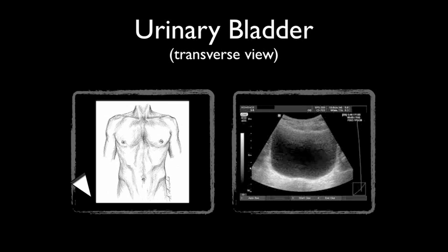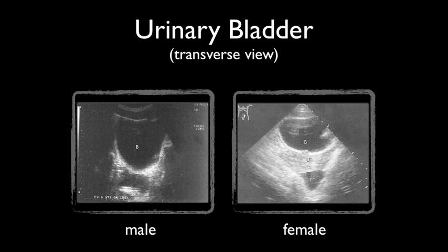To visualize the urinary bladder in the transverse plane, place the ultrasound probe approximately 2 cm superior to the pubic symphysis. Here's an example of a full urinary bladder. In these two examples, free fluid can be seen posterior to the bladder. In the female scan, note the position of the uterus between the bladder and the free fluid. This is the pelvic cul-de-sac, or the pouch of Douglas, which is another potential space between the uterus and the rectum. Best images are obtained when the bladder is full.